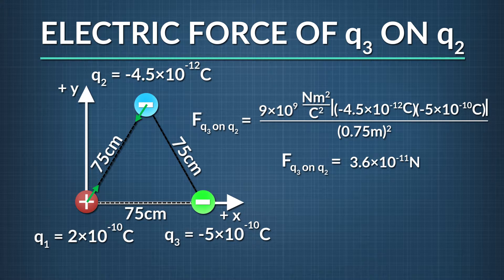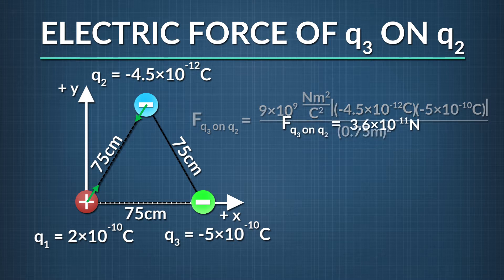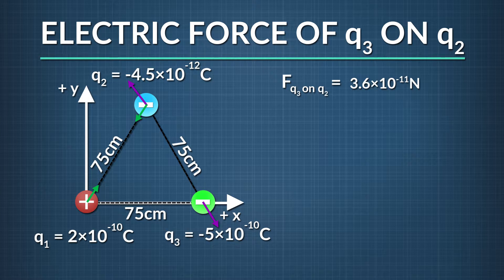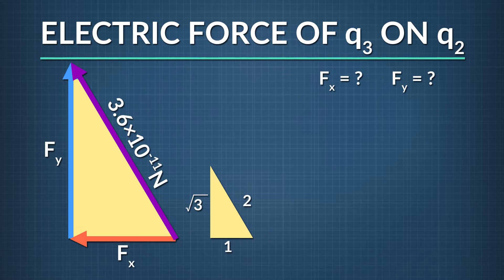This equals 3.6 times 10 to the negative eleventh newtons — that's the magnitude of the electric force of q3 acting on q2. Since q3 and q2 both have negative charges, they repel each other. The force on q2 points away from q3. Once again, we'll use our 30-60-90 triangle to find out the force components.